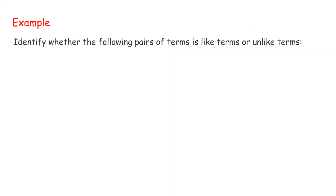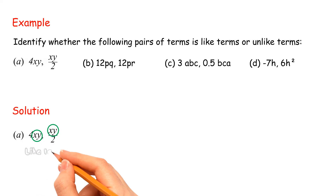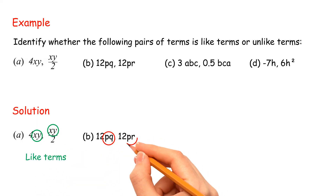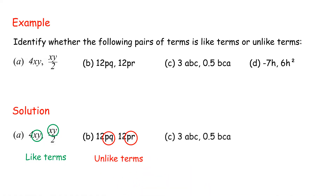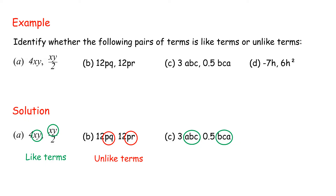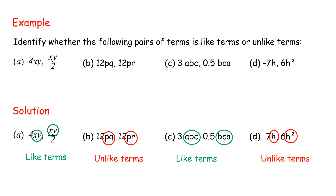Example: Identify whether the following pairs of terms are like terms or unlike terms. A: 4XY and XY/2 — like terms. B: 12PQ and 12PR — unlike terms. C: 3ABC and 0.5BCA — like terms. D: Negative 7H and 6H squared — unlike terms.